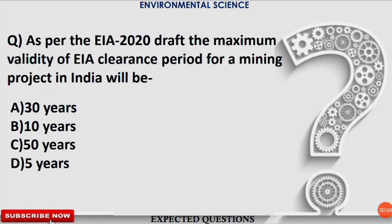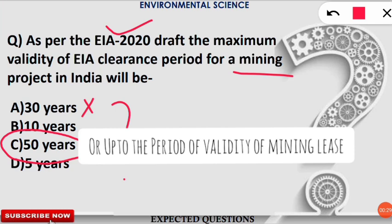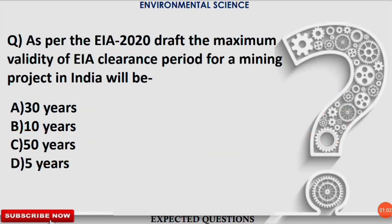The first question: as per the EIA 2020 draft, the maximum validity of EIA clearance for a mining project in India will be how many years? The correct option is C — 50 years. Previously it was 30 years. The validity is either 50 years or up to the period of validity of the mining lease. For river valley, irrigation, and nuclear power projects, the clearance validity is 15 years. For all other projects, the validity is 10 years.